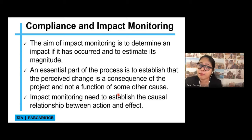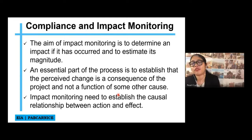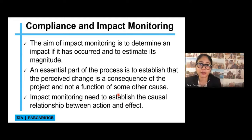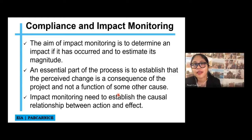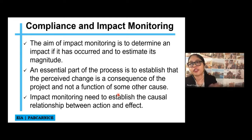The aim of impact monitoring is to determine if an impact has occurred and to estimate its magnitude — to know what is the level of the impact, whether the risk is high or just regular. An essential part of the process is to establish that the perceived change is a consequence of the project and not a function of some other cause. We have to quantify that it was the project that caused the adverse impact, not other factors or circumstances.